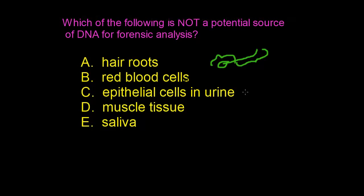Especially male urine usually contains sperm, which is also a perfect source for DNA extraction. And for muscle tissue, any body tissue is a very good source of DNA if it is not degraded and if the body is not decomposed.